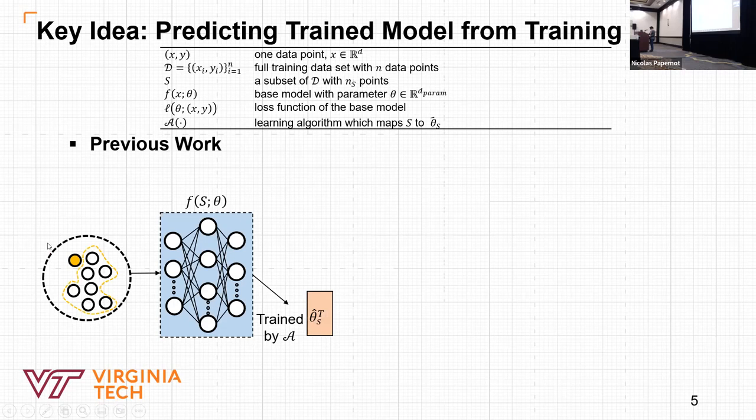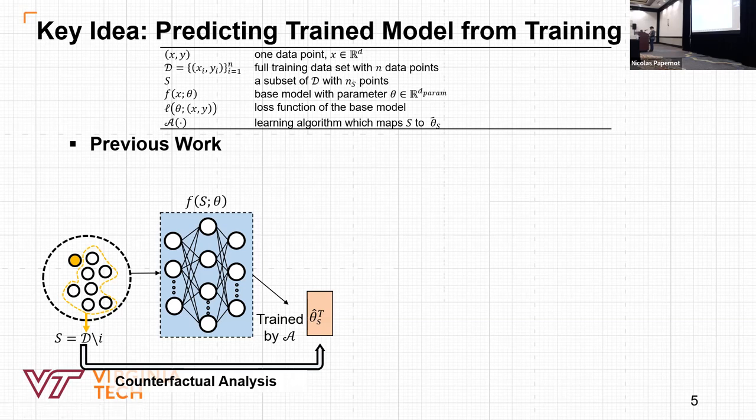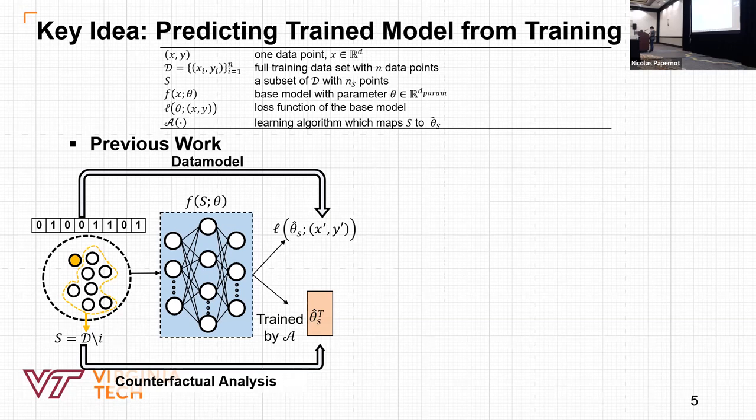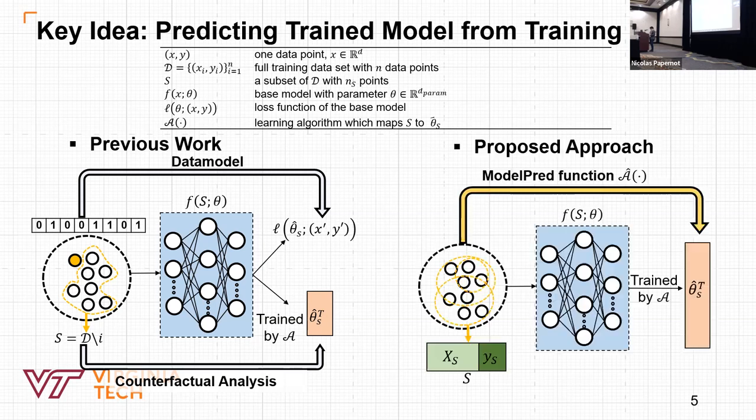In previous work, counterfactual analysis used the actual content of points to be removed as the input and used techniques like Taylor expansions to approximate new parameters trained by the subset S. Due to the capability of first-order approximation approaches, they cannot make accurate estimation when we have large changes in the training data. And DataModels use binary encoding as the input, which limits generalization to new unseen points. Also this method requires a new learning process if we have interest in model performance on different testing points or different evaluation metrics. So we address these limitations in our proposed model.